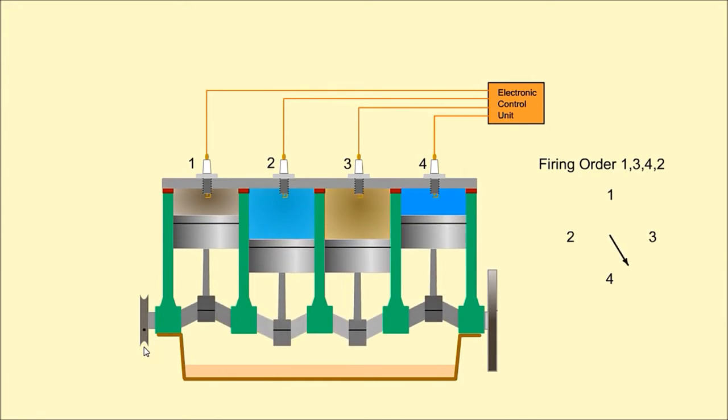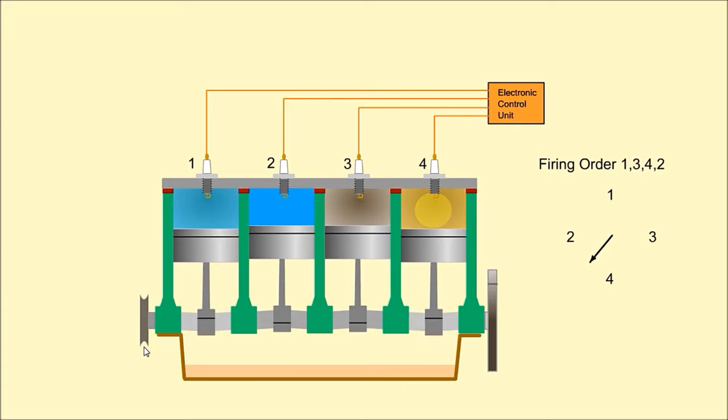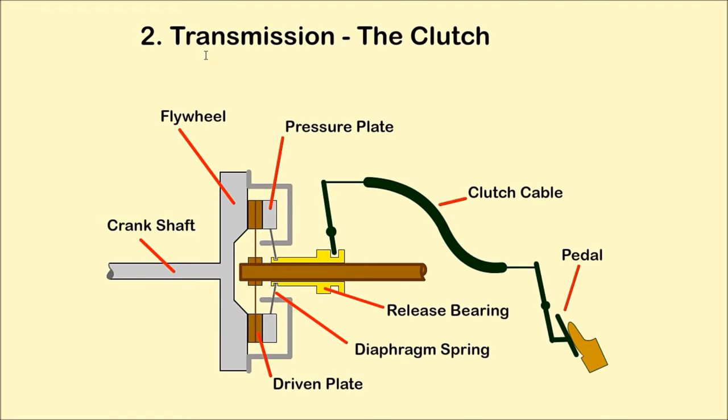Chapter two: transmission. To allow safe operation of the engine, it is necessary to separate the drive from the driven wheels. This is achieved with the clutch. The clutch is attached to the flywheel and it allows connection and disconnection of the crankshaft output. The driven plate is sandwiched between the flywheel and the pressure plate.